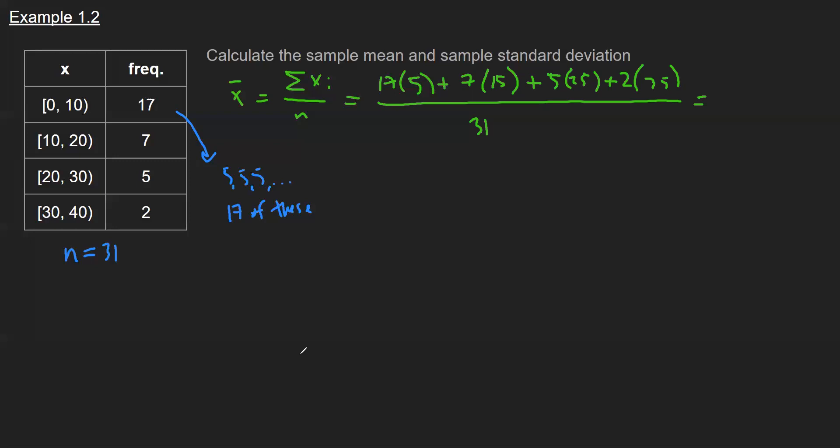Our regular sample mean is also a weighted mean — it's just that every value is weighted the same. Working through this calculation, the result is approximately 12.42. So if I were to average all those values, that's what I end up getting. A sample mean is just an average, which represents what I would expect if I were to pick a number arbitrarily from the data set.